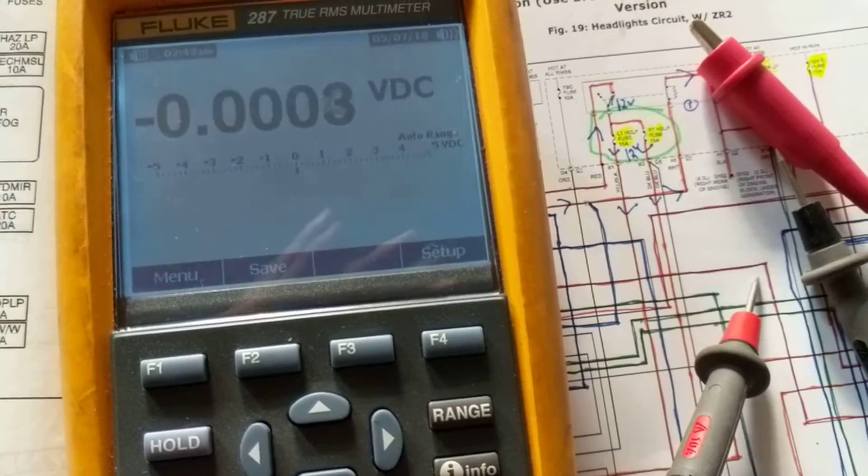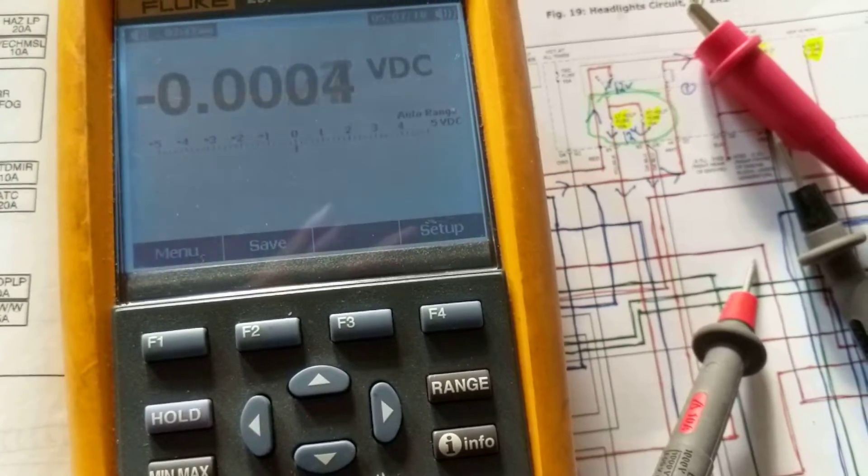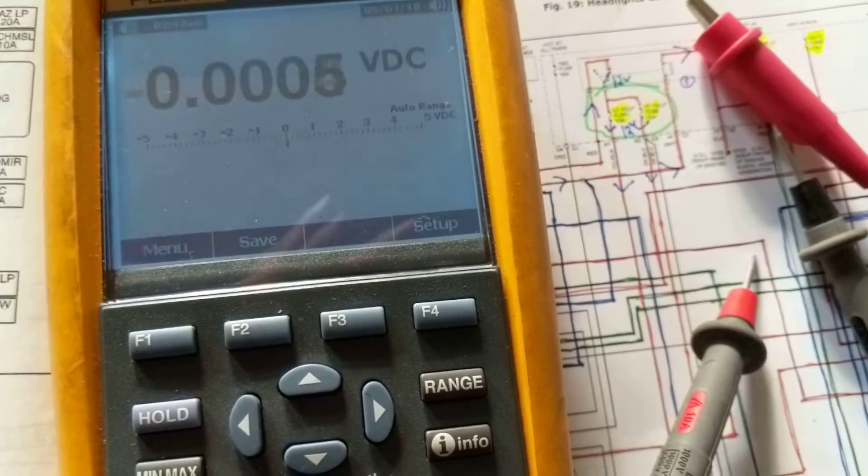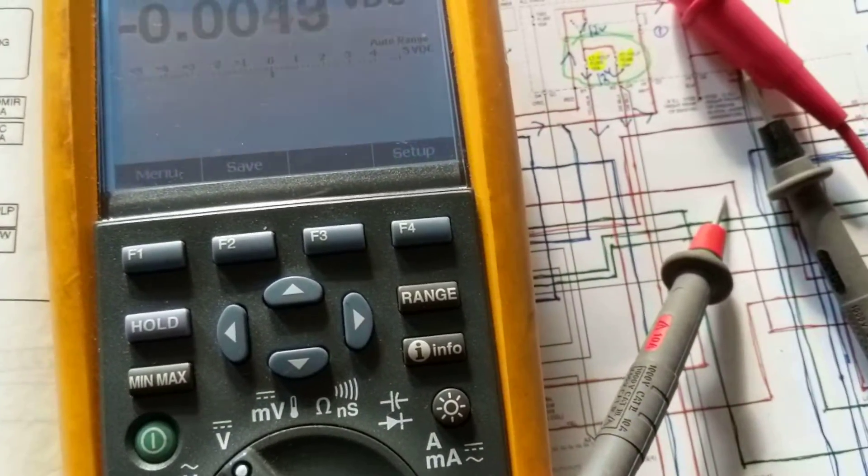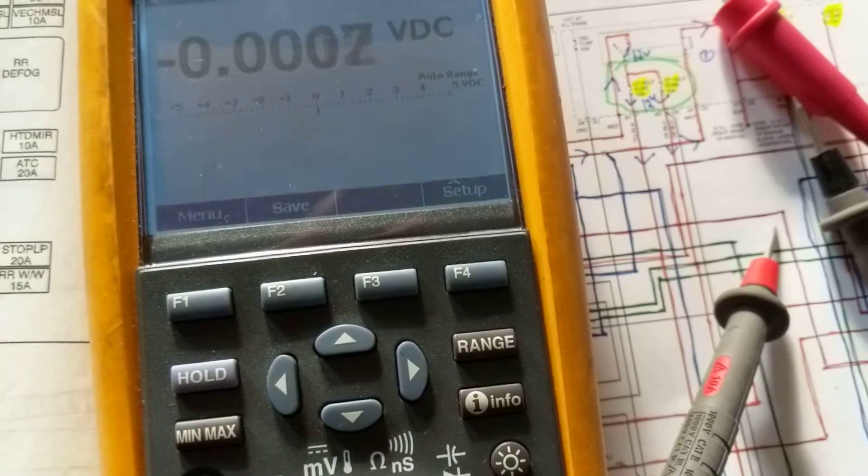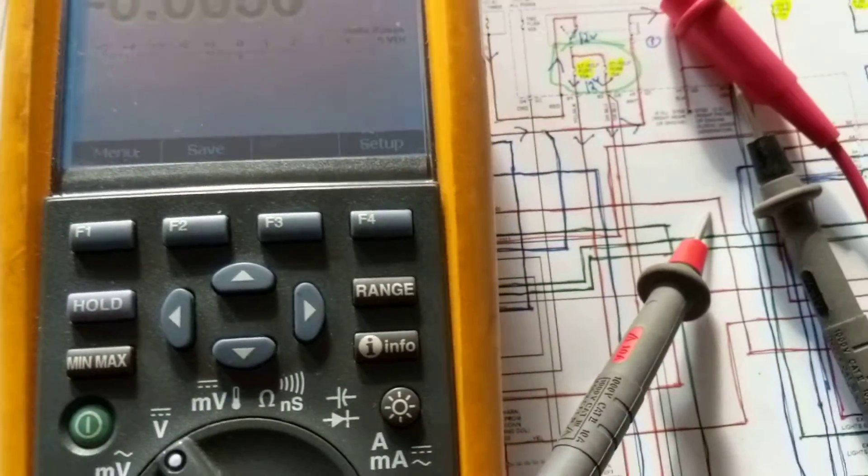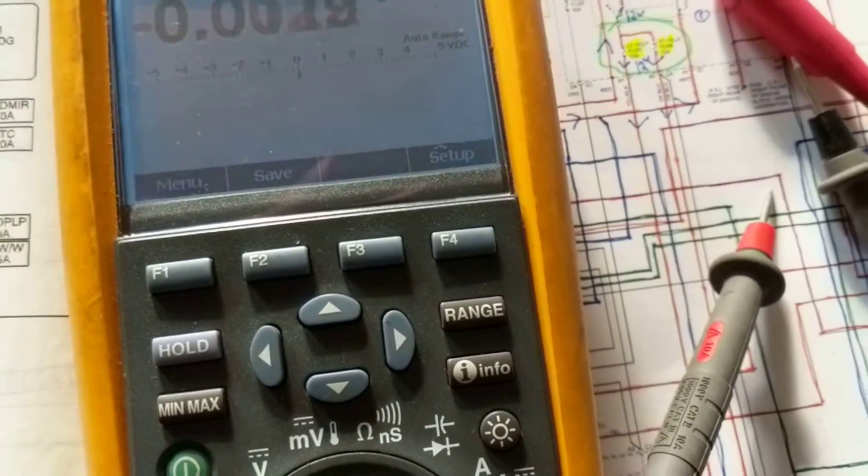But true RMS means if you have something other than a sine wave, you're going to get inaccurate measurements. This will give you the proper measurements. Let's say you want to measure some square wave or something, it'll give you the proper measurements of that.